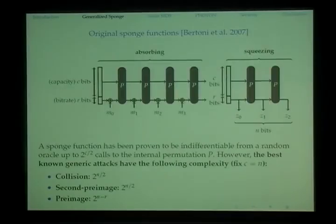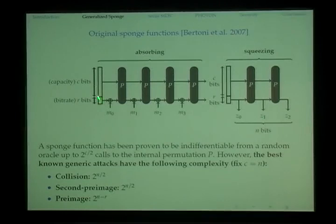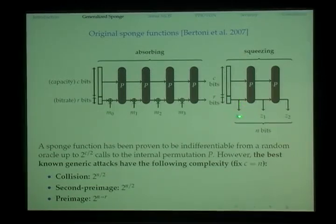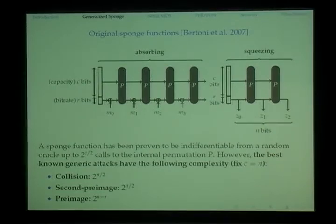Now for the preparations: the generalized sponge construction. The sponge construction takes arbitrary-length input, padded and split into blocks, fed into the internal state by XORing into the bit-rate portion, applying a permutation, feeding another block, and applying the permutation again. All messages are processed in this absorbing phase. After all messages are processed, the same bit-rate portion R bits is output, and if that is not enough, the permutation is applied again to output another R bits.